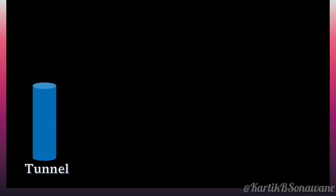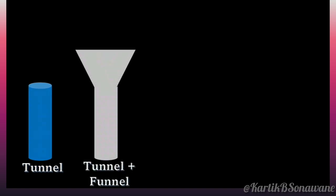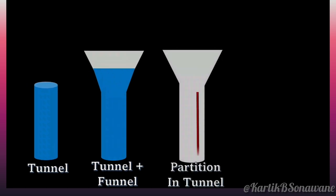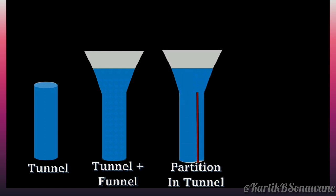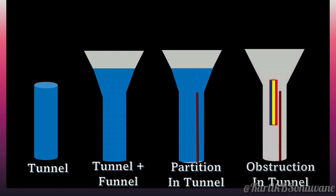If this tube is linked to a piston at the top, the fluid introduced into the piston chamber initially fills the lower section of the piston and then progresses into the connected tube. By introducing a partition within the tube, the liquid injected into the piston will be distributed uniformly on both sides of the partition. However, if an obstacle is introduced on one side of the partition, the injected liquid will preferentially distribute more on the unobstructed side due to the path of least resistance.